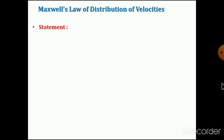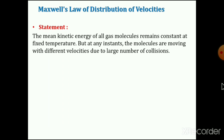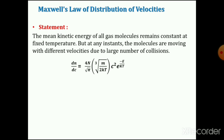Now see here what is the statement. The mean kinetic energy of all gas molecules remains constant at fixed temperature, but at any instant, the molecules are moving with different velocities due to the large number of collisions. We write one relation that we have to prove in this lecture: dn/dc is equal to 4n divided by √π, into (m divided by 2kT) raised to 3/2, into c squared, into exponential minus e divided by kT.